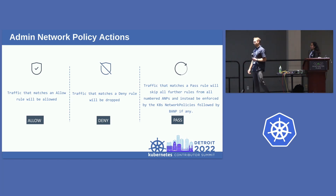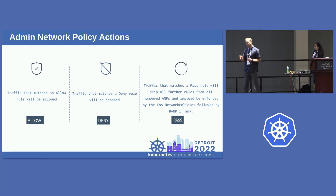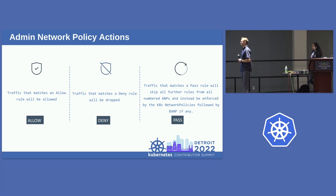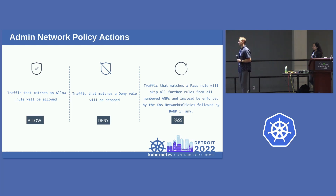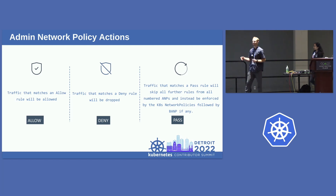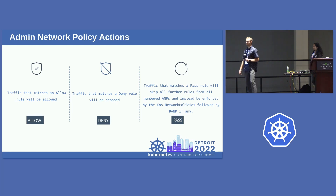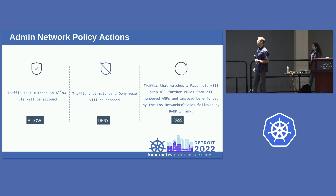We've added explicit actions to the Admin Network Policy API: allow, deny, and pass. Allow and deny speak for themselves — something we don't have in network policy that lets us be more explicit. Pass is a brand-new action with no real precedent, and it allows us to explicitly delegate traffic enforcement to application developers, solving user story 3.